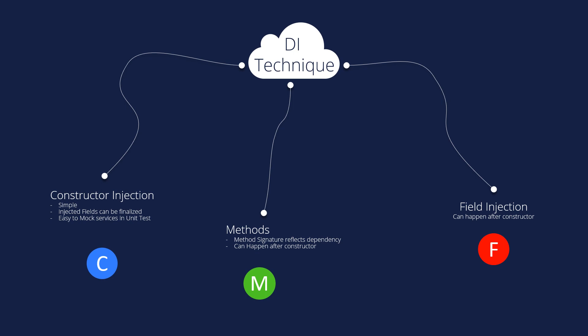We have three types of dependency injection techniques. We can make injection by constructor — that's constructor injection. The injected field can be finalized, and it's easy to mock services in unit testing. We will see unit testing in later courses.